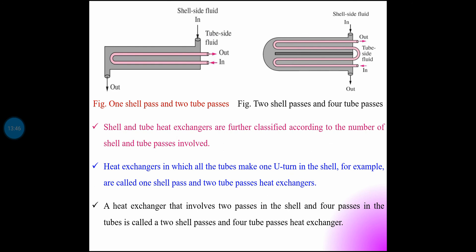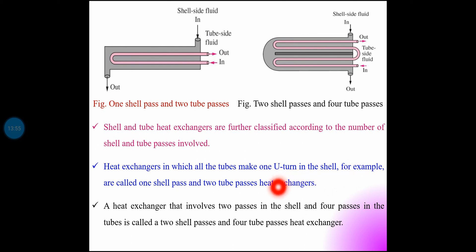For example, heat exchangers in which all tubes make one U-turn in the shell are called one shell pass and two tube pass heat exchangers.